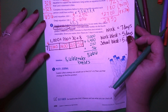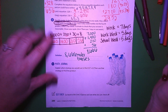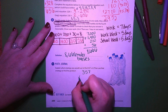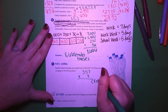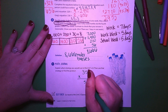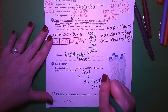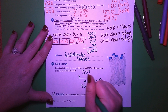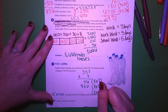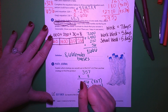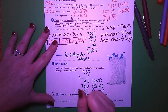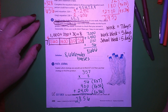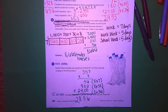Our last one — you can use any strategy you like. I'm going to use partial products: 357 times 8. Eight times 7 is 56; eight times 50 is 400; eight times 300 is 2,400. Adding those together: 2,400 plus 400 plus 56 equals 2,856. That is it for session 11 — I will see you back for session 12.